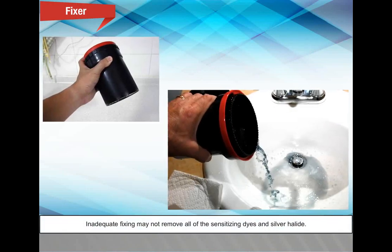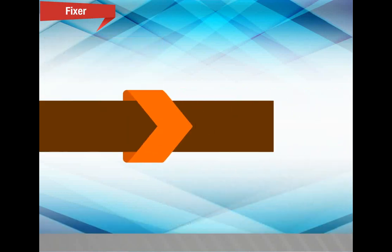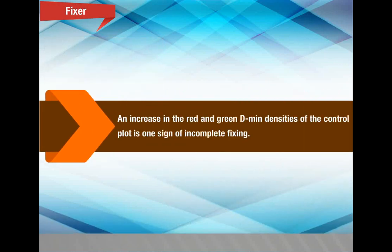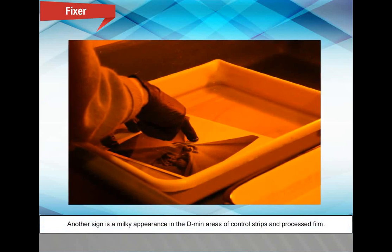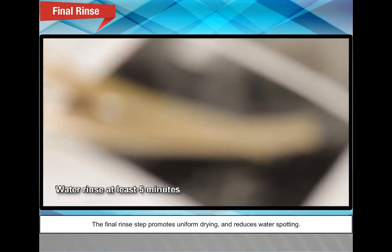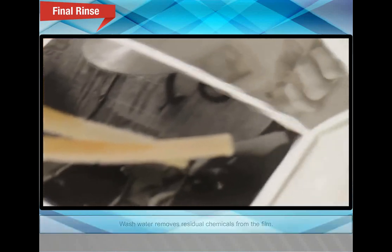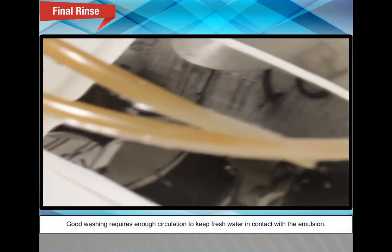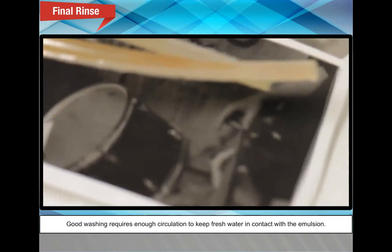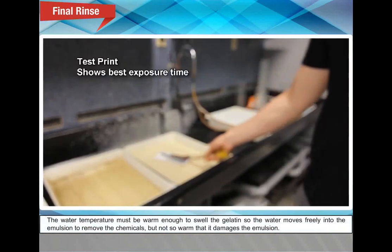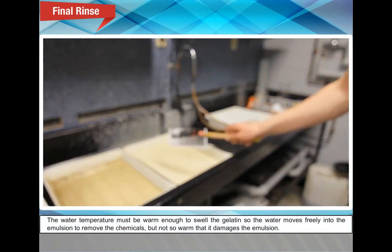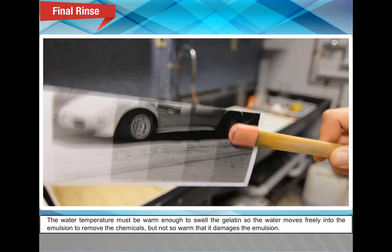Inadequate fixing may not remove all the sensitizing dyes and silver halide. An increase in the red and green D-min densities of the control plot is one sign of incomplete fixing. Another sign is a milky appearance in the D-min areas of control strips and processed film. Final rinse: the final rinse step promotes uniform drying and reduces water spotting. Wash water removes residual chemicals from the film. Good washing requires enough circulation to keep fresh water in contact with the emulsion. The water temperature must be warm enough to swell the gelatin so the water moves freely into the emulsion to remove the chemicals, but not so warm that it damages the emulsion.